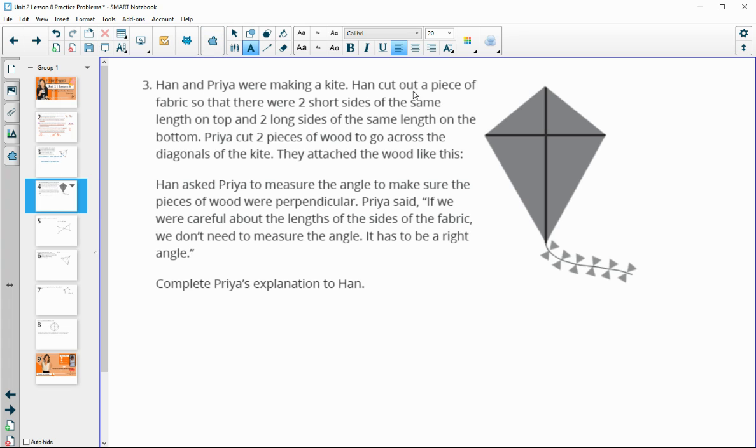All right, number three, Han and Priya were making a kite. Han cut out a piece of fabric so that there were two short sides of the same length on the top. So he cut these two to be the same length. And two long sides on the bottom to be the same length. Priya then cut pieces of wood to go across the diagonals of the kite. So here and here. And then they attached the wood like this. So Han asked Priya to measure the angle to make sure the pieces of wood were perpendicular. So asking her to measure to make sure that this is a 90 degree angle. Priya said, if we were careful about the lengths of the sides of fabric, we don't really need to measure. It has to be a right angle. So complete Priya's explanation to Han. So why is that true?